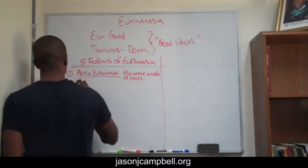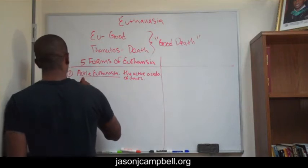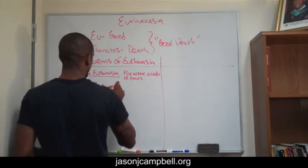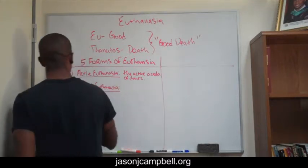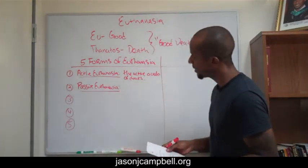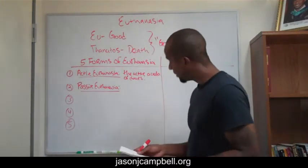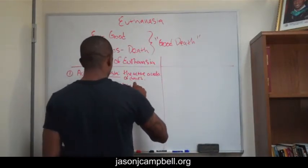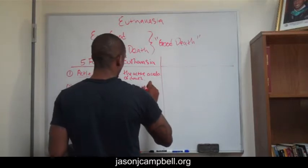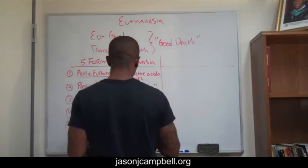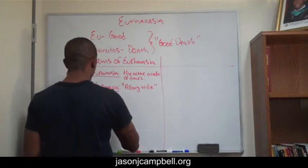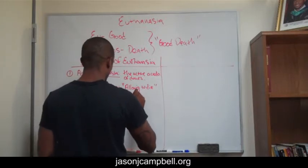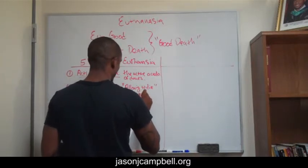The next form of euthanasia is what's known as passive euthanasia. This is technically known as allowing someone to die. You allow the individual to die, and it results from withholding medical intervention.